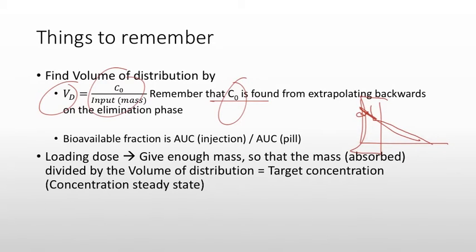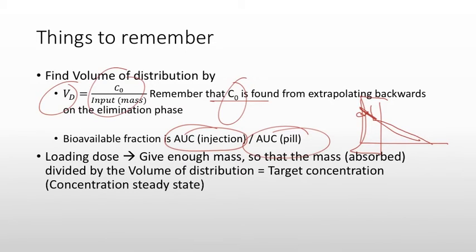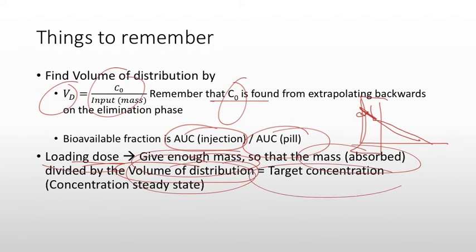The bioavailable fraction is the area under the curve for an injection divided by the area under the curve for a pill. For oral dosing, the time to peak concentration and the peak concentration itself are important parameters. For a loading dose: give enough mass so that when you divide the mass by the volume of distribution, you're at your target concentration — your steady-state concentration.